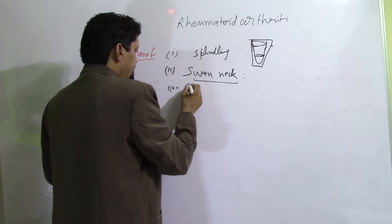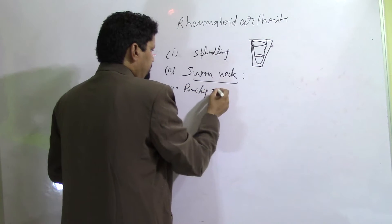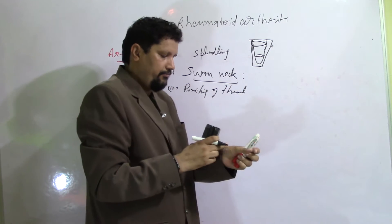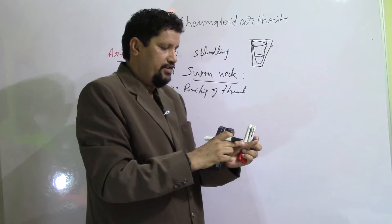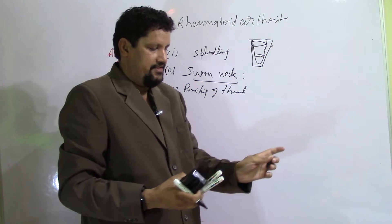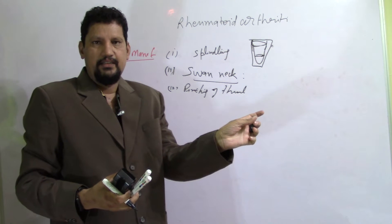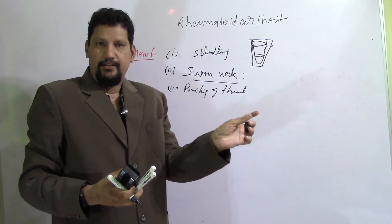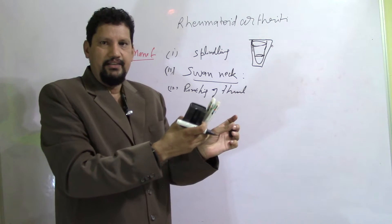The fourth is the pinching deformity of the thumb, in which there is flexion of the metacarpophalangeal joint and extension of the interphalangeal joint of the thumb, leading to inactivity of the thumb joints.